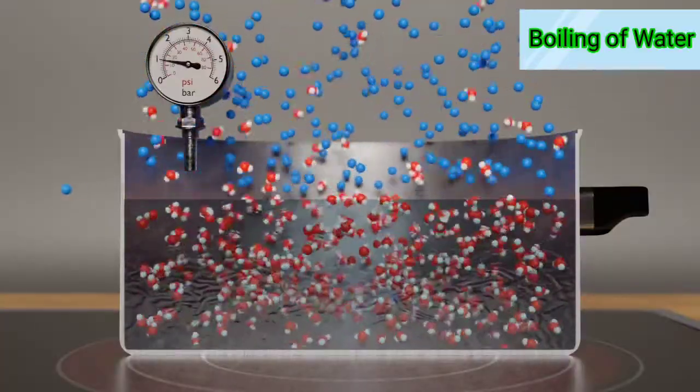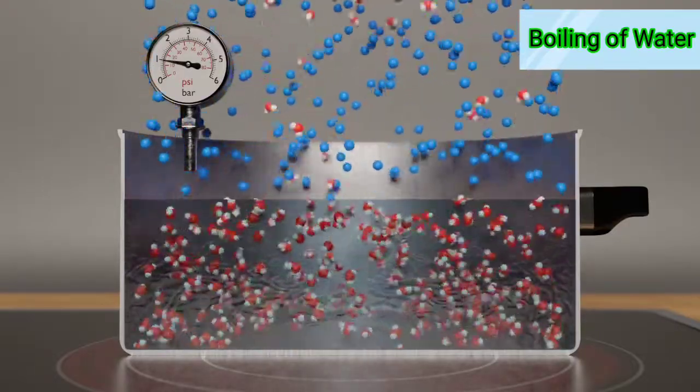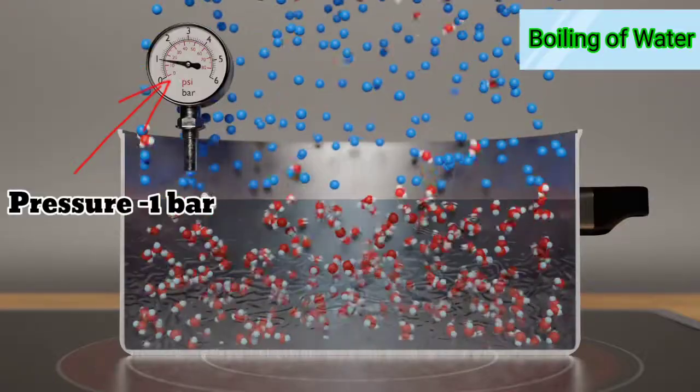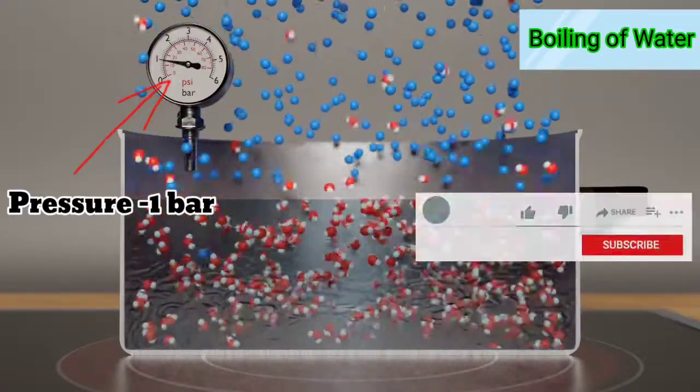Molecules overcome the binding force of the liquid and enter the gaseous phase. At an ambient air pressure of one bar, vaporization of water takes place at a temperature of 100 degrees. However, if the ambient air pressure is increased, the air molecules collide more strongly with the surface of the liquid.